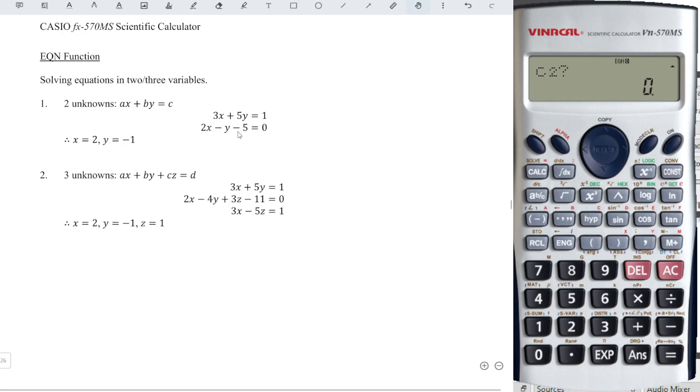And C2, we cannot input negative five, since this is on the left-hand side. What we need is on the right-hand side. So we have to bring it to the right and become plus five. And press equal. Then we will obtain the correct answer for x and for y. Then we're done.